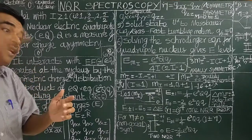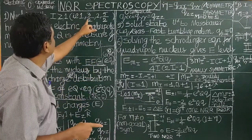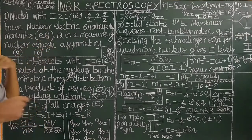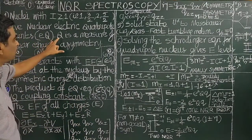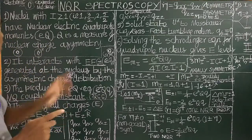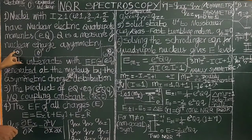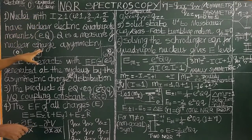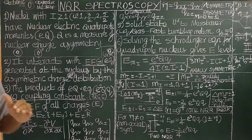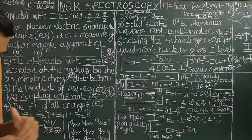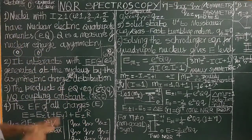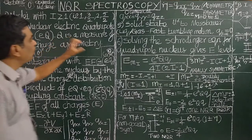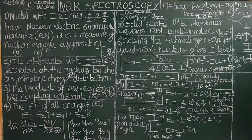For nuclei having I greater than or equal to 1 — with half-integral or integral spin values — this is represented by the nuclear quadrupole moment, represented by eQ. Q is a measure of the nuclear charge asymmetry. When the nuclear charge is symmetric there is no quadrupole moment, but when the nuclear charge is asymmetric, the nuclear quadrupole moment is observed. Therefore, Q is a measure of nuclear charge asymmetry.